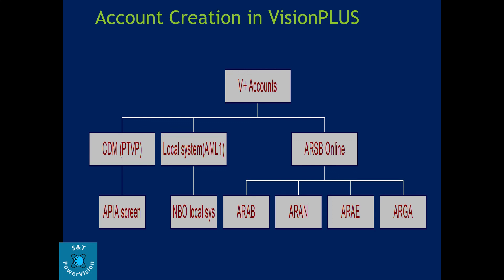In Vision Plus, account boarding is done through the ARSB online screen — that is the account boarding online screen. After that, we provide details in ARAB for the account base segment, ARAN for name and address, ARAE for card details, and ARGA for the relationship number. Apart from ARSB, many businesses have their own setup to board the card through a front-end application. With ARSB, we can board only one account at a time, and entering detail on multiple screens like ARAB, ARAN is very time-consuming. So to do mass creation of accounts, many businesses have their own setup. Some also use front-end applications to board multiple accounts at the same time.